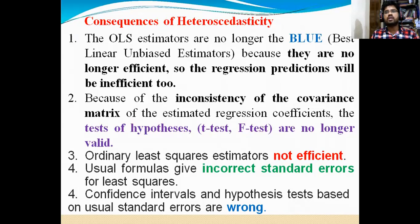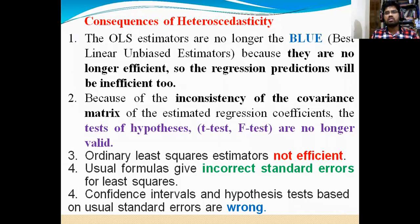That is the Best Linear Unbiased Estimator. Why? Because they are no longer efficient. The regression prediction will be inefficient. Whatever values we estimate are no longer efficient — the values are not efficient. In that case, the predictions will be inefficient.